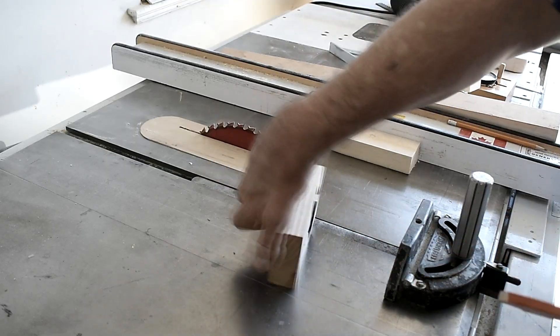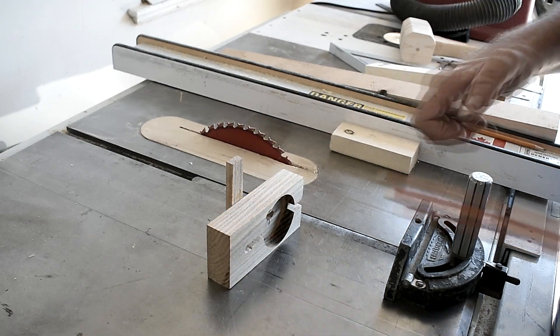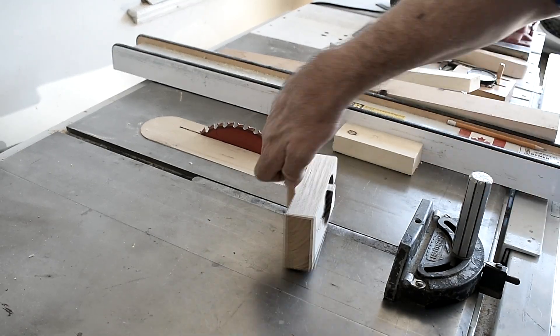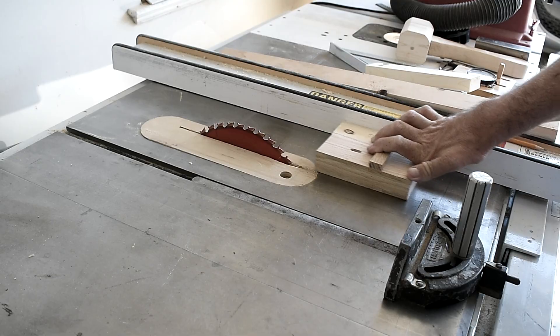So I'm going to cut one end at an angle and I should have done that first before I put the runner on, but I'll just use a block and cut it through like this.